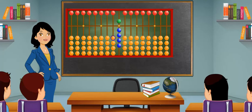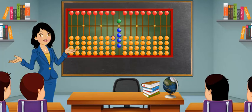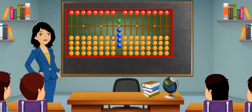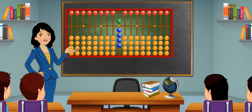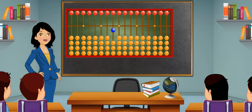To show number 10, show one on the tens place by bringing one earthen bead upward, and zero on the ones place by taking four earthen beads down and the heaven bead up. This is number 10. To show number 11,